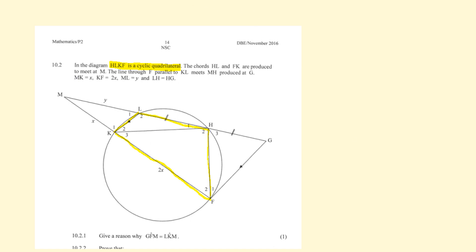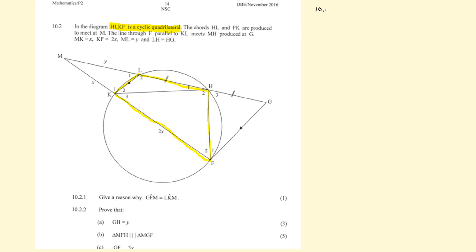Question 10.2.1 says: give a reason for why angle GFM equals angle LKM. Angle GFM is the entire angle F, so F2 plus F1. Angle LKM is K1. If we look at the position of these two angles, they are positioned on the letter F shape — these are clearly corresponding angles.